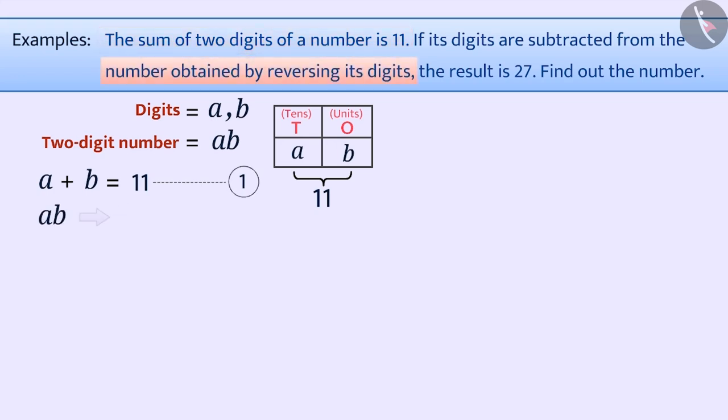If we interchange the digits of AB, we get the number BA. The given condition is BA minus AB, which is equal to 27.